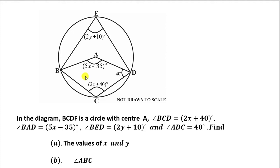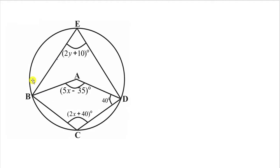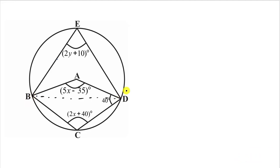Now let's start. Let's assume that we have our diagram. For us to find X and Y, we have to get some equations. Some circle theorems are going to work here. Now, if A is the center, then the angle at the center is twice the angle at the circumference. That is, if this is a chord, then the angle that this chord subtends at the center is twice the angle that the same chord subtends at the circumference.